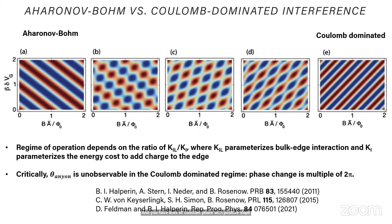And so what happens is if the Coulomb interactions are sufficiently strong, you go into the Coulomb-dominated regime, where what you call essentially interference is completely flipped from the AB case, and you have lines of constant phase with positive slope. Now, the important point for our discussion is in this Coulomb-dominated regime, in principle, you are insensitive to the anionic phase. So essentially, every time a quasiparticle is introduced, it comes with a 2 pi accompanying phase, which, of course, is not visible in the experiment.